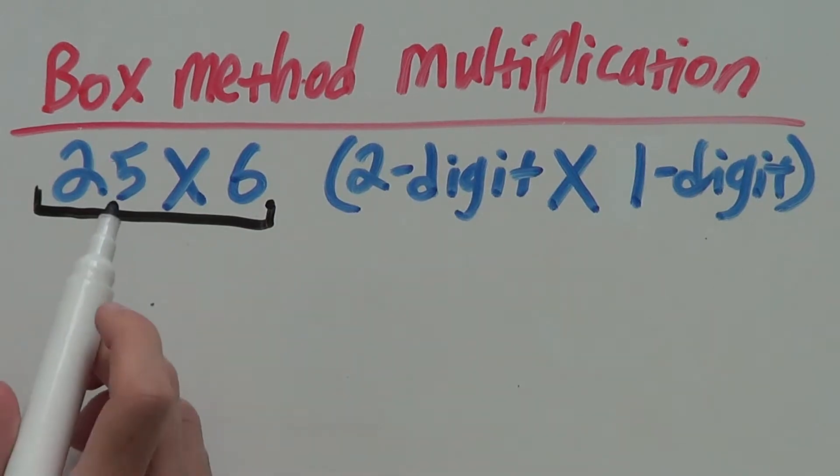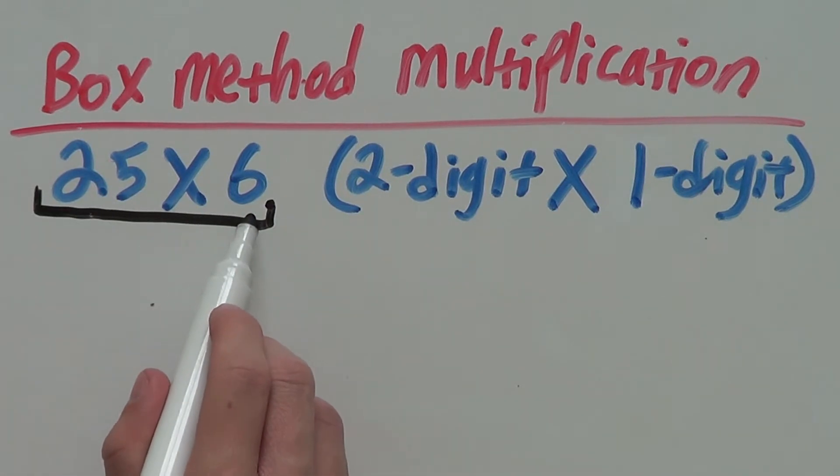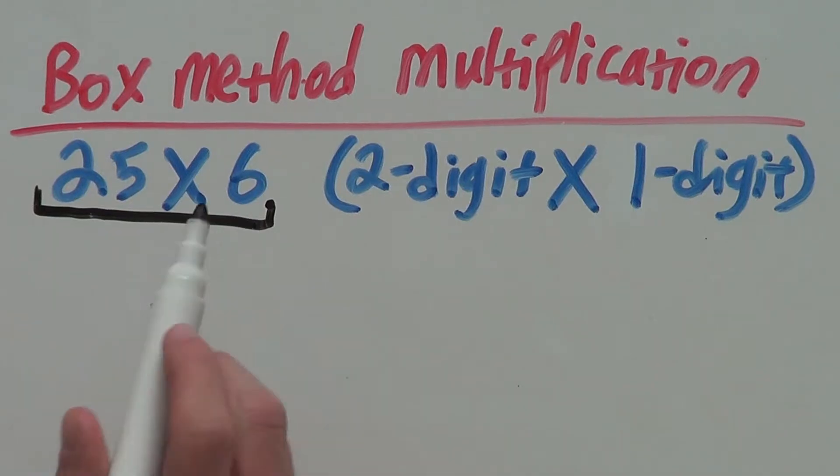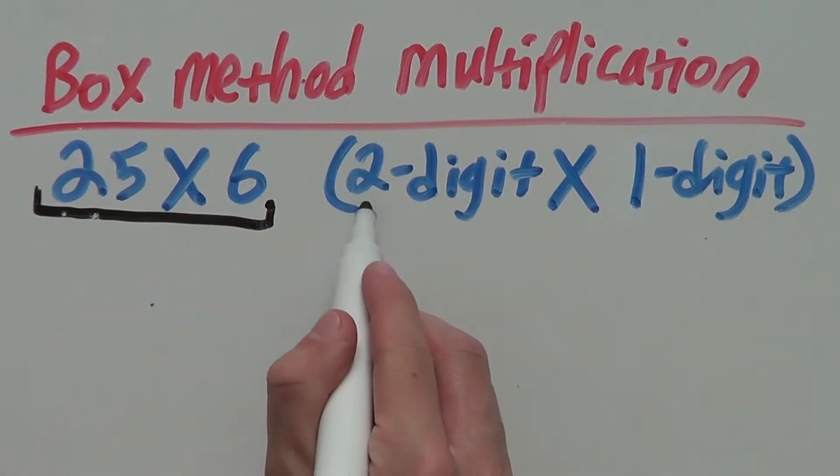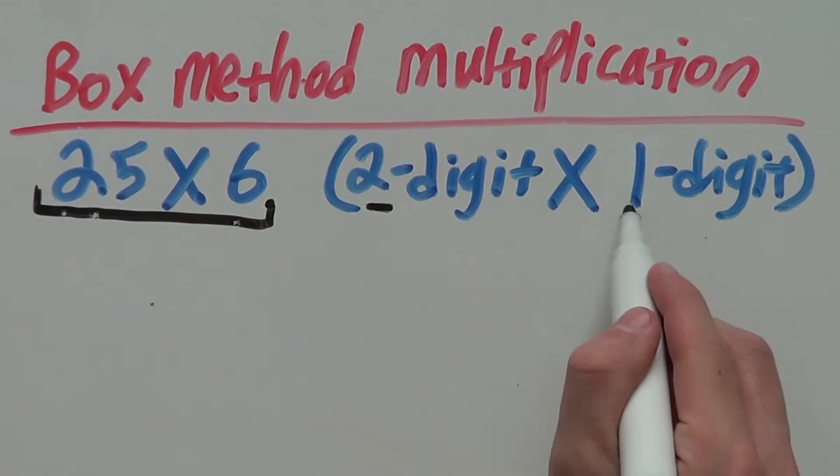Let's say we want to multiply 25 by 6. This will be a 2 by 1 box. We know this because 25 is 2 digits and 6 is 1 digit.